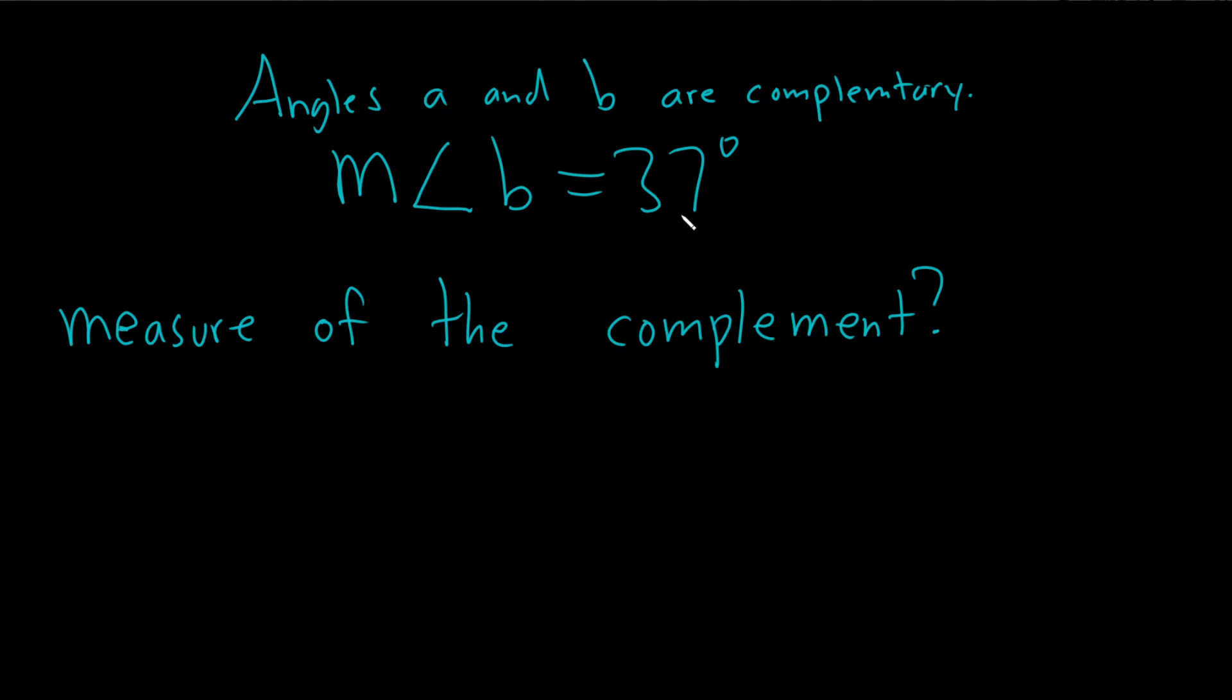Angles A and B are complementary and we're told that the measure of angle B is 37 degrees. What is the measure of the complement? In other words, what is the measure of angle A?